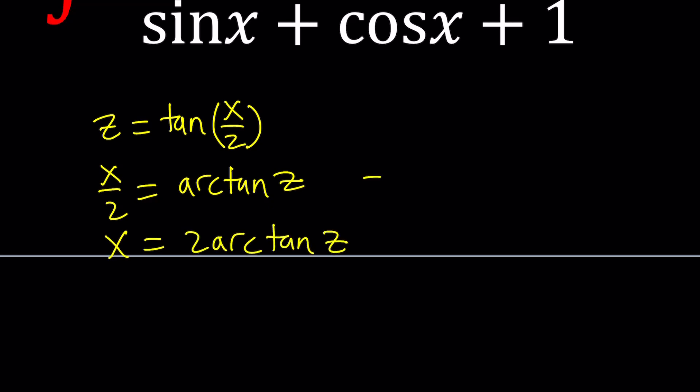You could also write arc tangent as tan inverse. That notation is commonly used in the United States, but I don't think it's very common. That's why I tend to use arc tangent, arc sine, arc cosine these days. Anyways, so that's my x value, and finding x in terms of z is important because we do need to get to dx.